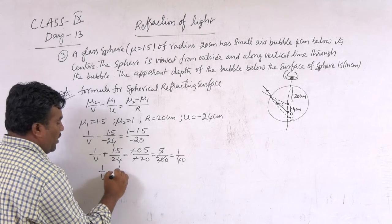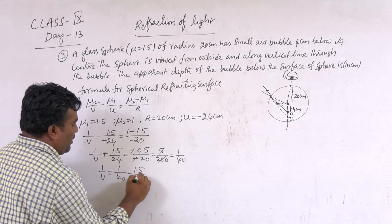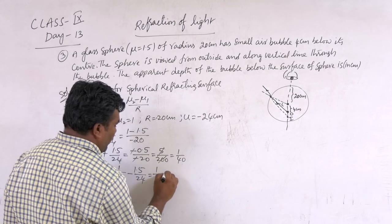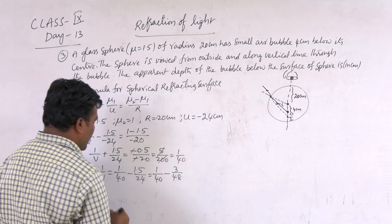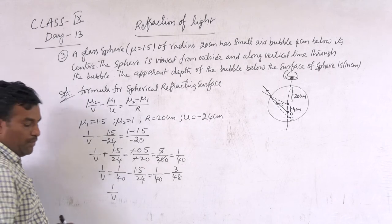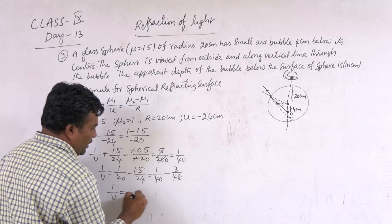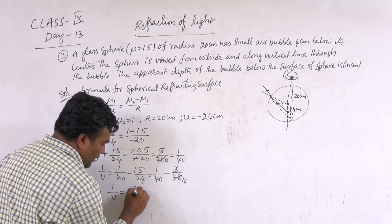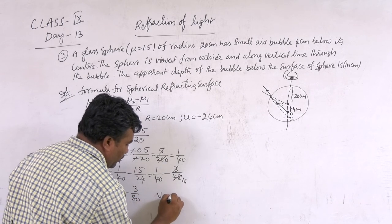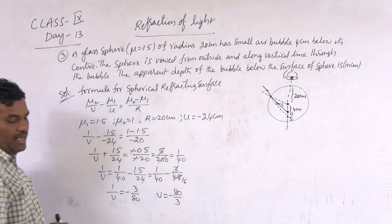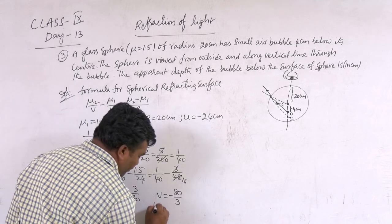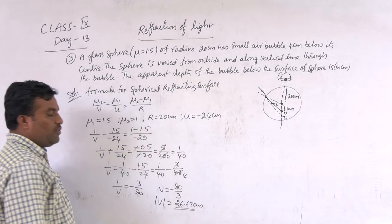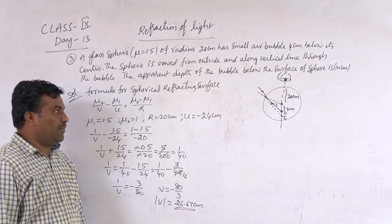So 1/V = 1/40 − 1.5/24. Writing 1.5/24 as 3/48: 1/V = 1/40 − 3/48, giving −3/80. Therefore V = −80/3. Finally, V = −26.67 cm. So the image, i.e., the apparent depth of the bubble, is 26.67 cm.